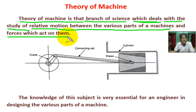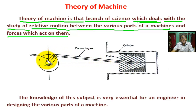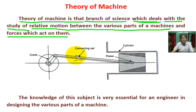For example, this is a reciprocating engine. There are many parts: this is the cylinder, this is the piston, this is the connecting rod, and this is the crank. Here pressure energy is converted into mechanical energy and the crank shaft rotates. In this machine, we study the relative motion between components — connecting rod, piston, cylinder — and the forces which act on them.